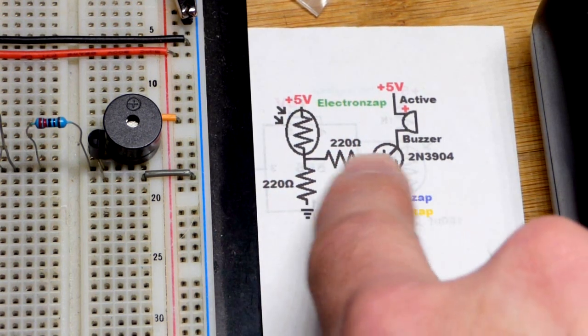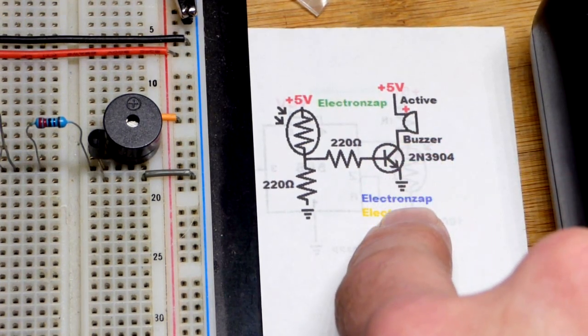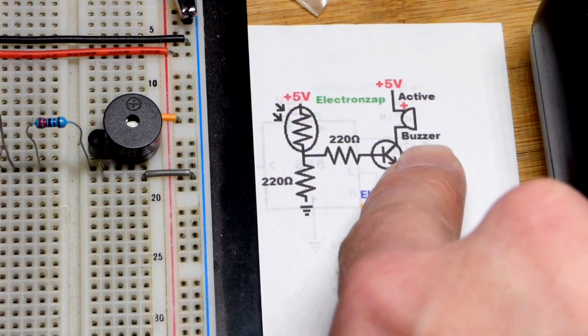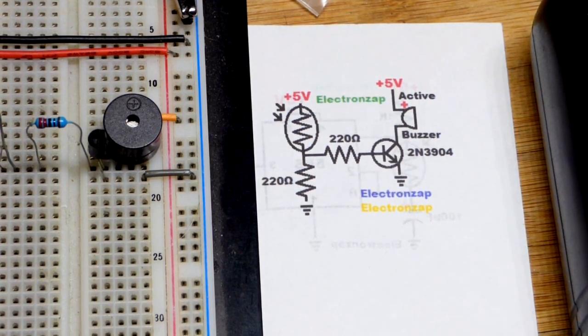But in any case, about 0.6 volts, a little bit of current goes from base to emitter. That lets a lot of current flow from collector to emitter. And as we saw, we don't need a ton of current for the active buzzer to get it buzzing.